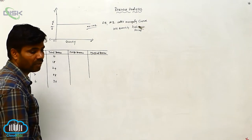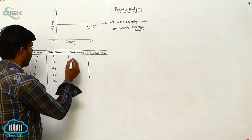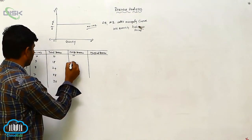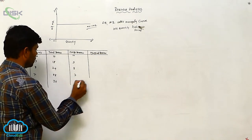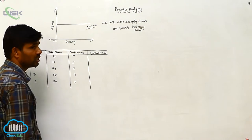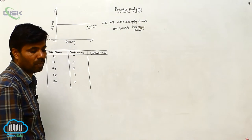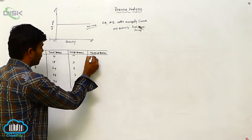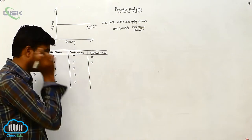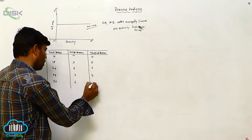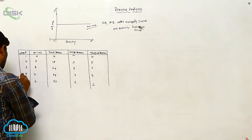So what is the average? How to get the average? Average revenue is the same as price: 10, 9, 8, 7, 6 — there is no change in the average. Next is marginal revenue: 10, then 8, then 6, then 4, then 2. So marginal revenue declines.